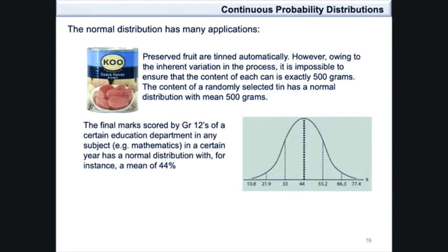A second example takes a look at marks scored by grade 12s in a subject. If the average is 44%, then most students' marks are around the mean and fewer students will have extremely higher marks or extremely lower marks from this mean of 44%. Again, the normal distribution becomes an appropriate distribution to fit this type of data.